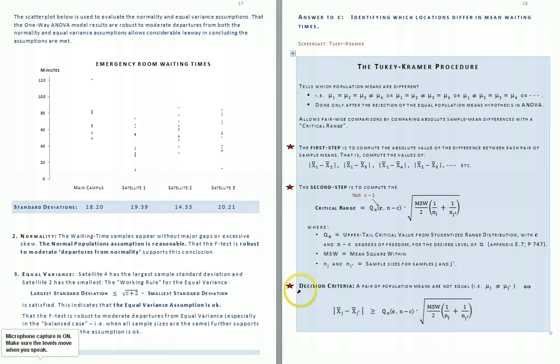The final step in the Tukey-Kramer process is simply comparing the absolute values in the differences of sample means with the value of the critical range. Whenever one of these absolute values exceeds the value of the critical range, your decision is it's okay to view those two population means as different.